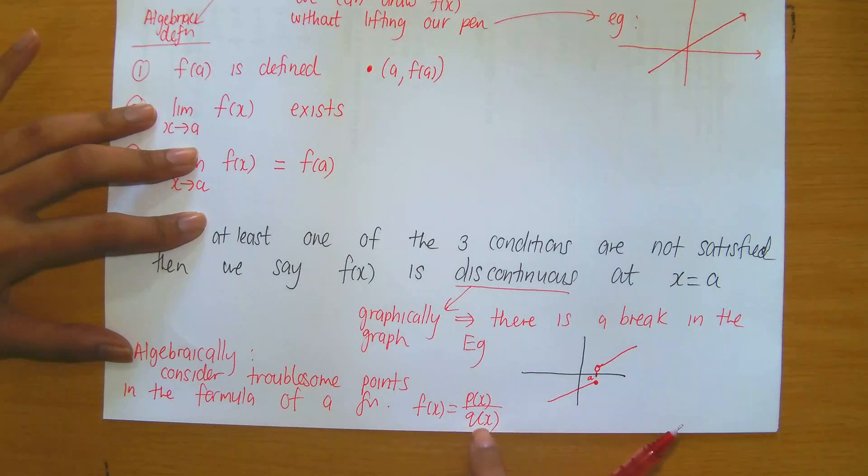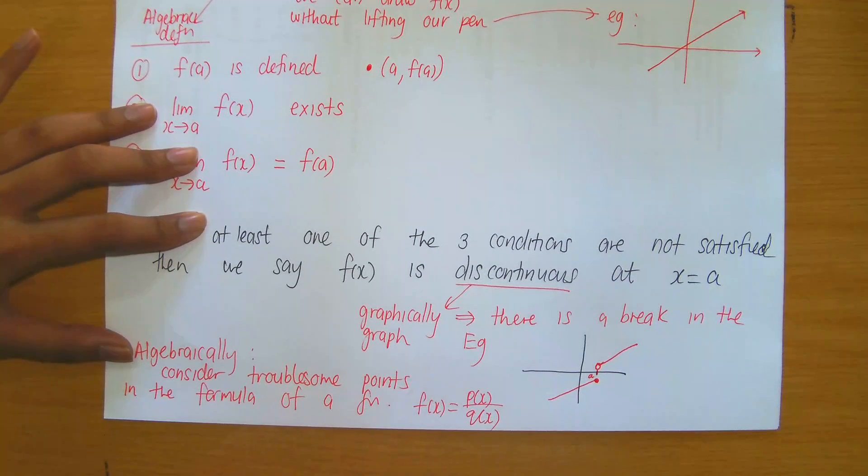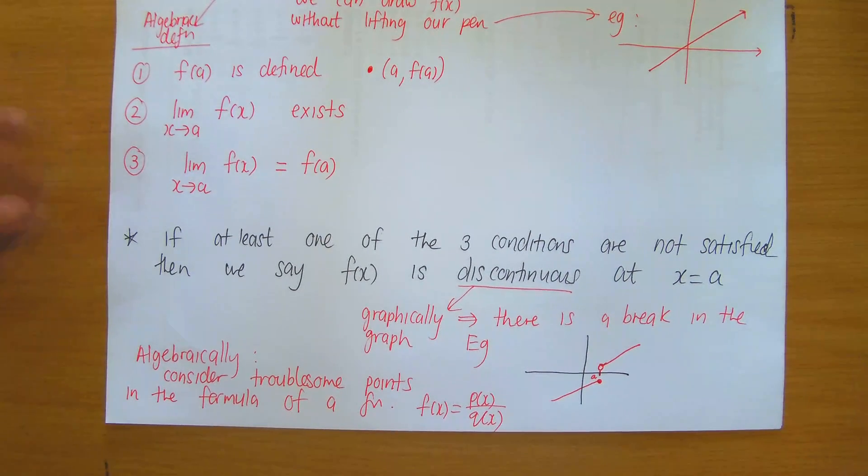Find the x values for which the denominator is zero and that would be a troublesome point that you would now have to check if there is a discontinuity or if there isn't.